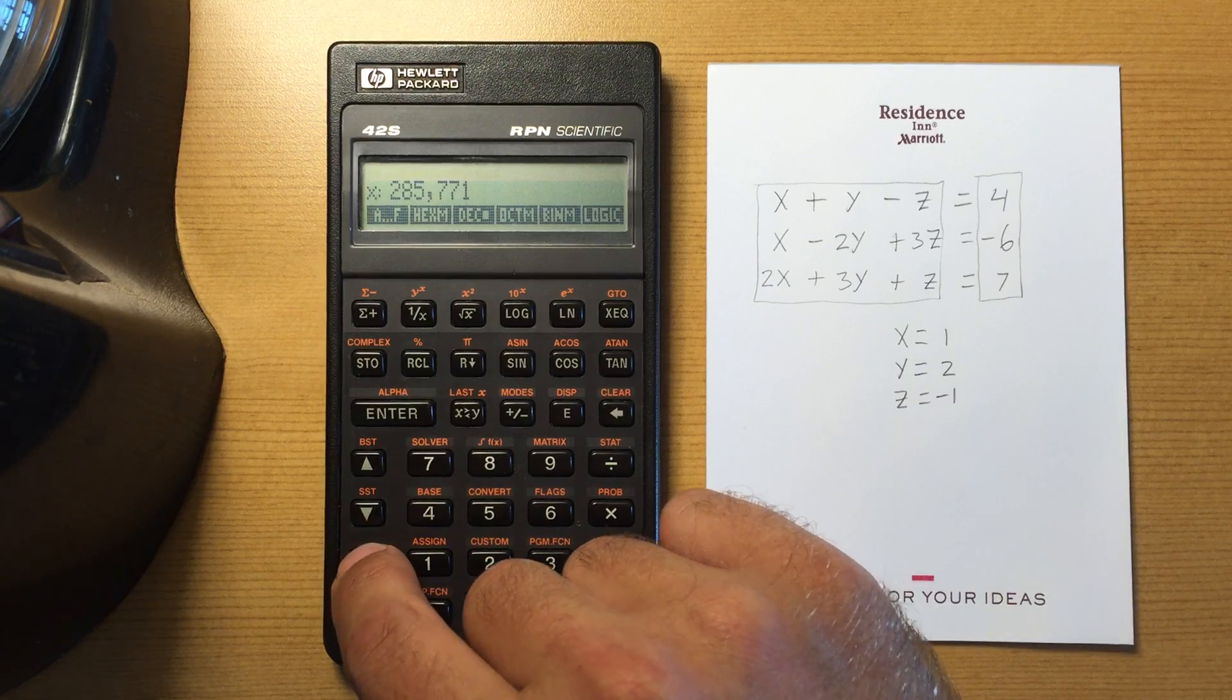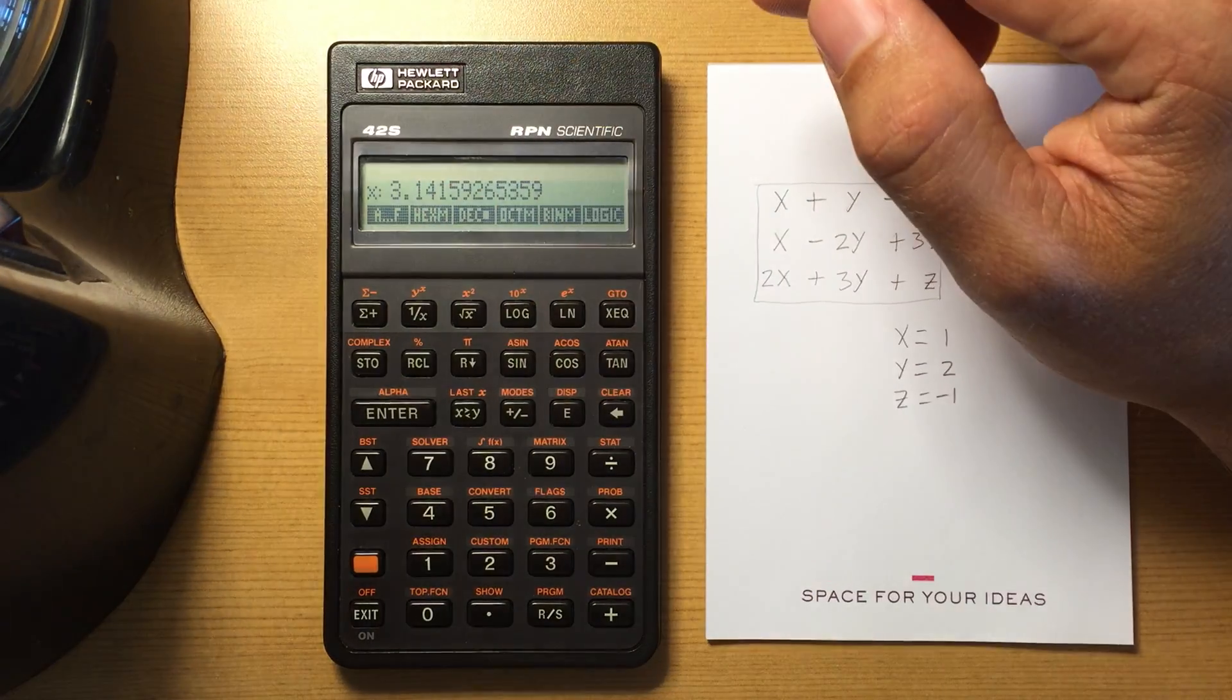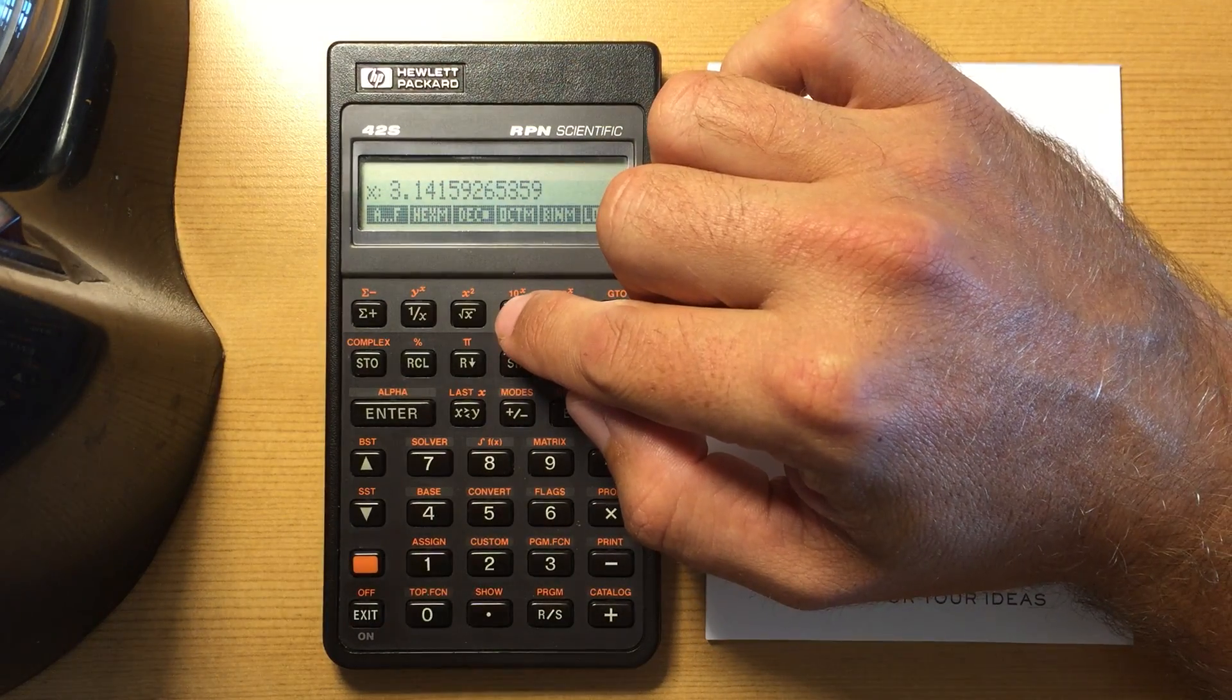So decimal numbers will show the decimal point. If I convert to another base...